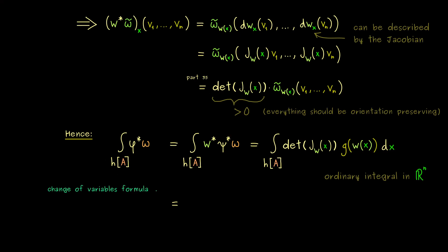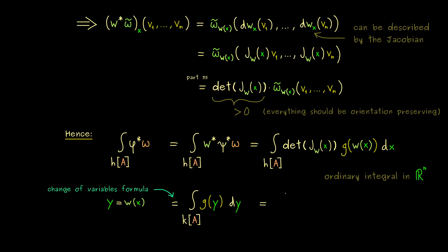We set y equal to w of x. By the substitution rule, the determinant of the Jacobian of the diffeomorphism comes in — with absolute value — but since we have a positive determinant anyway this is not a problem. By the substitution we get g of y dy over the transformed domain. That is already the change of variables formula. Recalling that g represented omega tilde, and omega tilde was simply psi star omega, we can write the whole thing as an abstract integral of psi star omega. There we have it — the proof is finished. We have shown the equality.